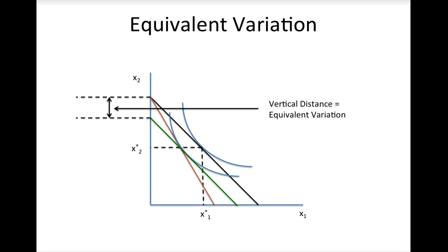One way to think about the equivalent variation is that it measures the amount the consumer would be willing to pay to avoid the price change. A nicer way to think about equivalent variation is that it tells you how to translate a price change into an income loss or gain. For example, if the price of gas increases, it is like an income loss because you have less money to spend on other things. Similarly, when the price of gas falls, it feels like you got a raise.